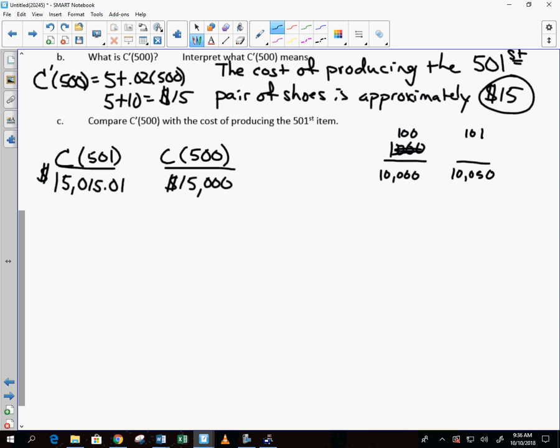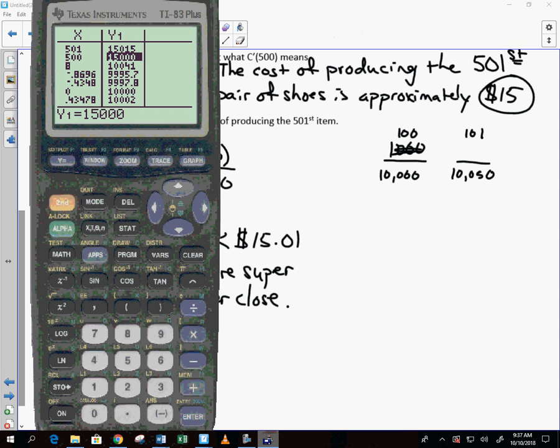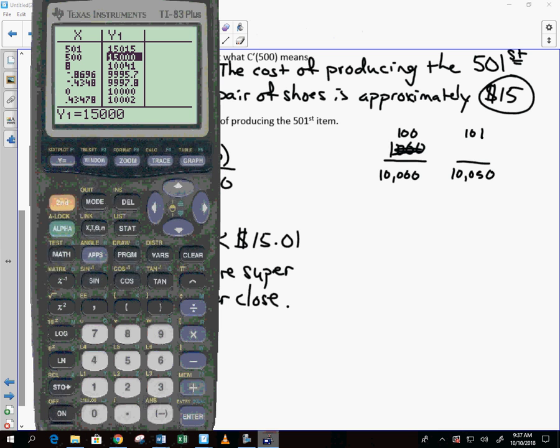So it says that we estimate the cost of producing the next item to be 15 bucks. What is the actual cost? The actual cost is $15.01. They are pretty close, though, aren't they? And that's why it's an estimation. Because we produce an integer number of items as opposed to a fractional number. Not too bad, huh? Okay. Sure, that's fine. You could say, they are super-duper close. Yep. Sure, that'll be fine as well. All right, Brayden and Zach. Later.